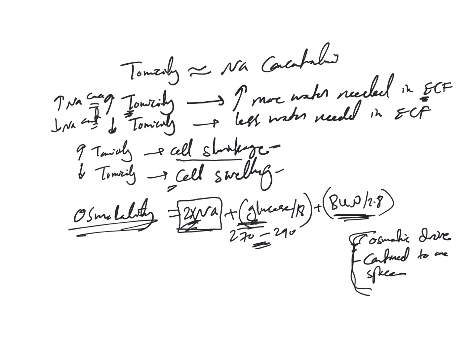There is something I want you to understand before we move on, which is the osmotic gap. The osmotic gap is the difference between the measured osmolality minus the calculated osmolality. We'll come back to how this is used when we evaluate hyponatremia and hypernatremia in more detail.